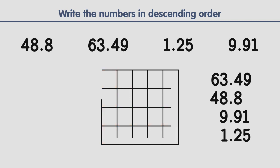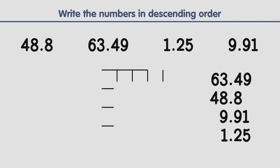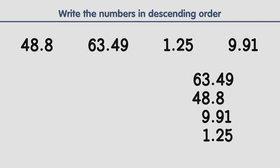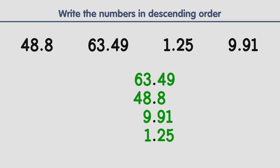And this is how we order decimal numbers in descending order, from highest to lowest.